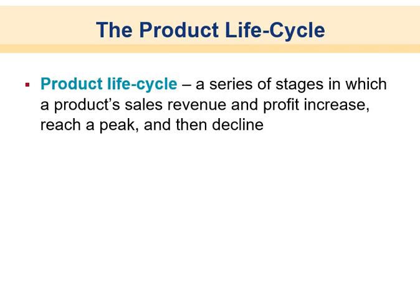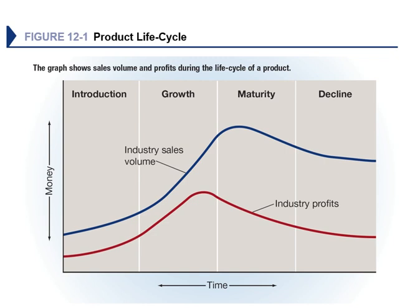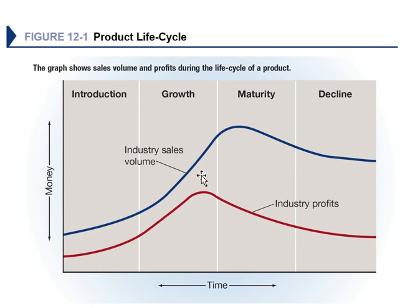Product life cycles describe a series of stages in which a product's sales revenue and profit increase, reach a peak, and then decline. Just like living things, products have a life cycle. There are four main stages: introduction, growth, maturity, and decline. Sales volume grows to a peak and then declines — and keep in mind that sales revenue is not profit; profit is total revenue minus total cost.